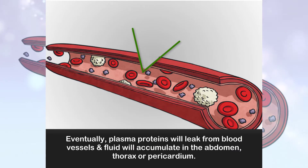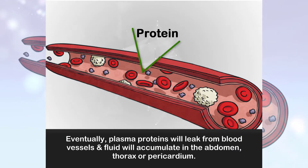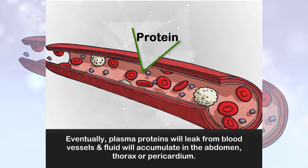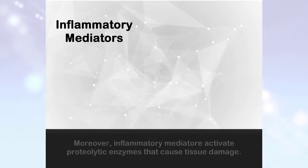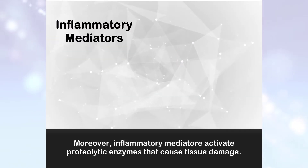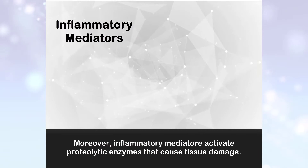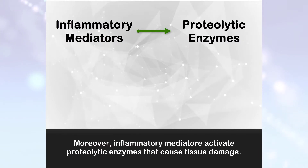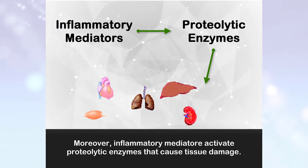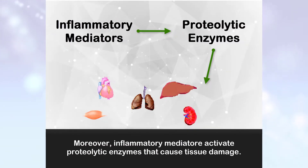Vasoactive amines increase vascular permeability. Eventually, plasma proteins will leak from blood vessels and fluid will accumulate in the abdomen, thorax, or pericardium. Moreover, inflammatory mediators activate proteolytic enzymes that cause tissue damage.